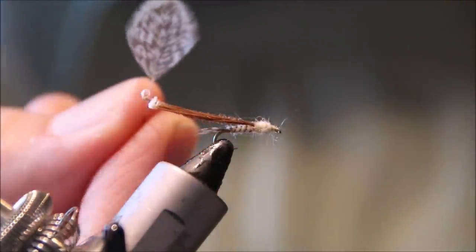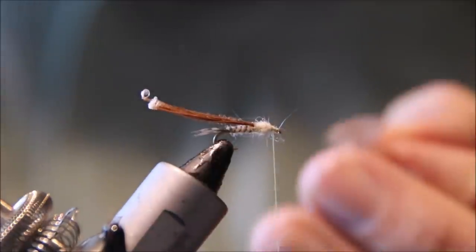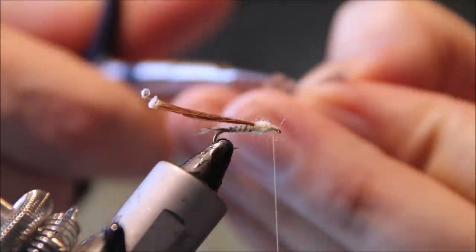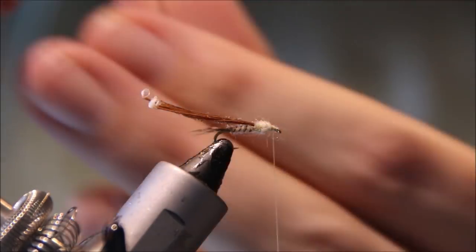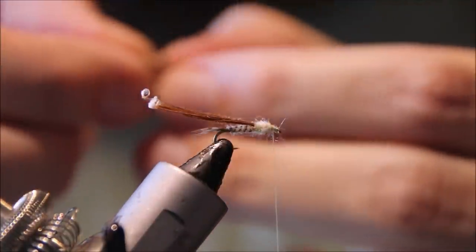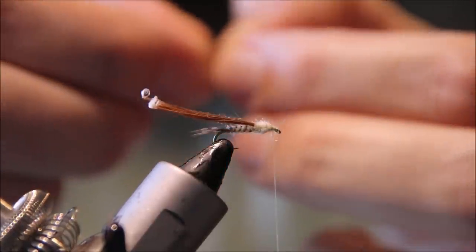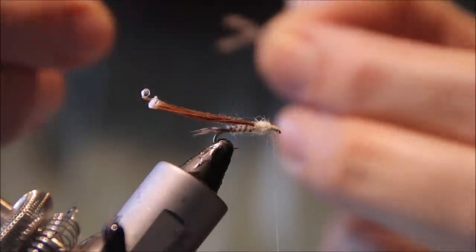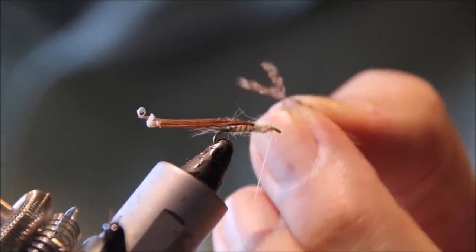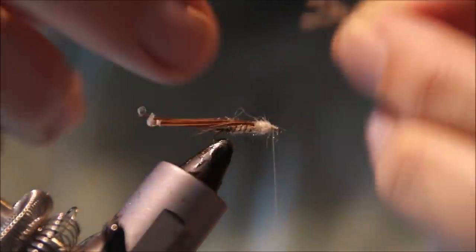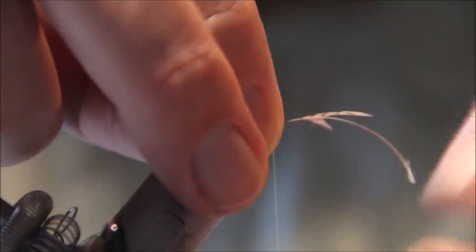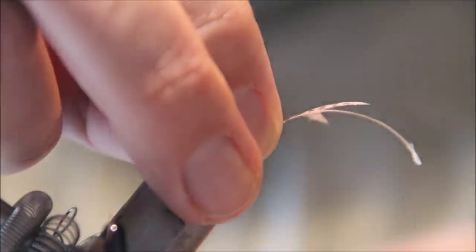Now for the legs. I've got the same feather I used for the tail. I'll take the tip out and sweep it back to create a chevron shape, evening it up so I have a nice V with fibers on either side.